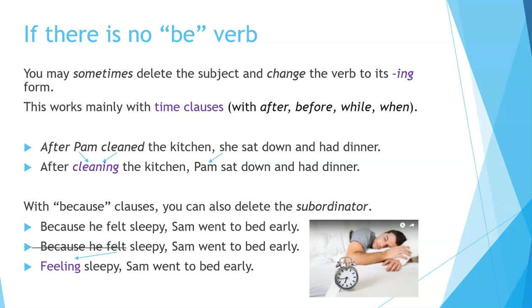If there is no be-verb, you may sometimes delete the subject and change the verb to its -ing form. This works mainly with time clauses — with after, before, while, and when. For example, 'after Pam cleaned the kitchen, she sat down and had dinner' can be reduced to 'after cleaning the kitchen, Pam sat down and had dinner.' With because clauses, you can also delete the subordinator. For example, 'because he felt sleepy, Sam went to bed early' can be reduced to 'feeling sleepy, Sam went to bed early.'